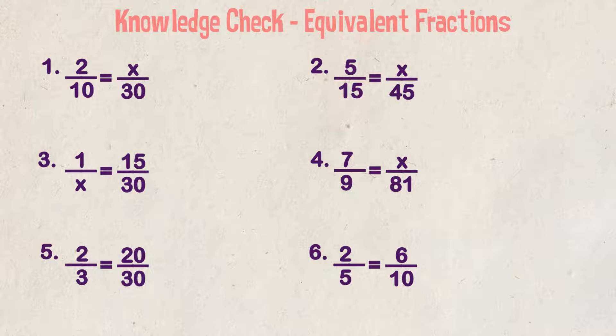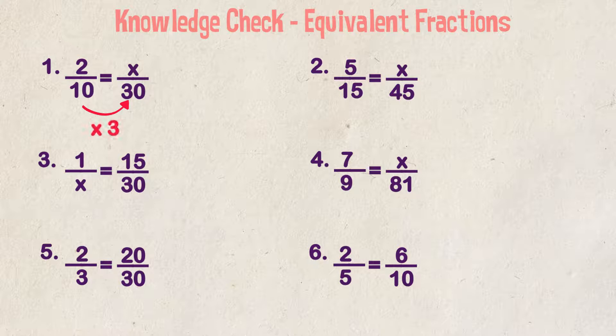Example one, 2 over 10 equals x over 30. We can look at this two ways and I'll walk through both. First, we know the denominator of 10 can be converted into a denominator of 30 by multiplying the denominator by 3. If we multiply the denominator by 3, then we have to multiply the numerator by 3. When we do that, we get x is equal to 6.